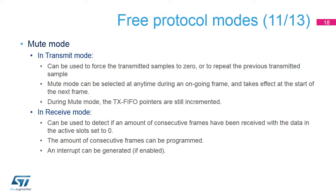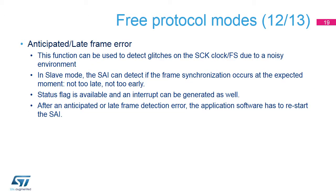The SAI also provides a mute function. In transmit mode, the user can choose to send zeros on muted slots or the previous transmitted value. The previous transmitted value is limited to configurations having one or two slots per frame. Note that in transmit mode, the TX FIFO pointer is still incremented, meaning that the data which was present in the FIFO and for which the mute mode is requested is discarded. The receive mute mode can be helpful to detect an amount of consecutive slots having all data reset to zero.